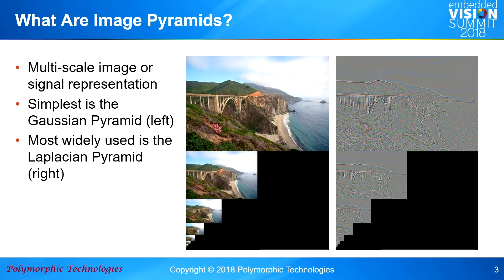The simplest is a Gaussian pyramid, and on the left here you see an example where you basically have taken the image and subsampled it in a way that's Nyquist-frequency friendly, until you get down to lower and lower resolutions. The Laplacian version of it is on the right, which has difference planes.